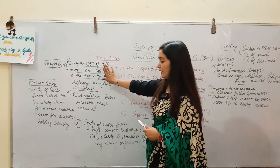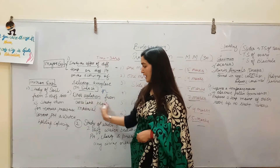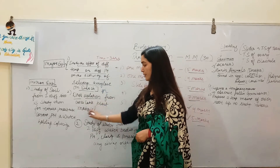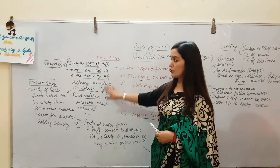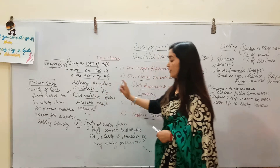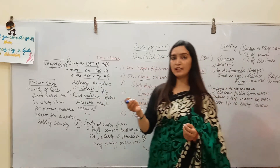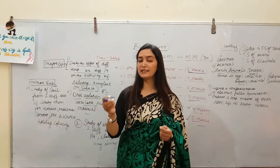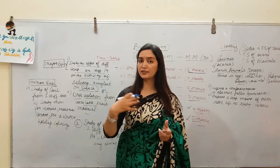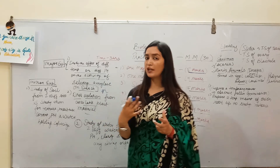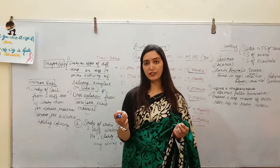The second major experiment option is DNA isolation from available plant material. Out of these two major experiments, one will be given to you for 5 marks. You will have to write the theory, procedure, diagram, observation, and all calculations in the sheet provided by your teacher.